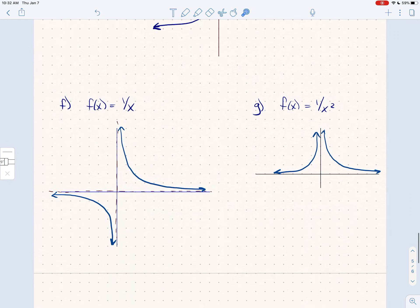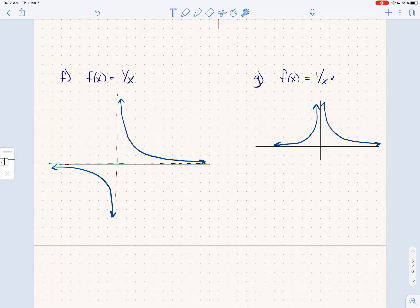Two more functions you should know. f of x is 1 over x. There's a vertical asymptote at 0. There's a horizontal asymptote of y equals 0 because the degree downstairs is 1 and the degree upstairs is 0. And so the basic shape looks like this.